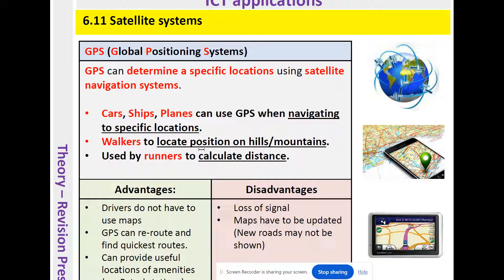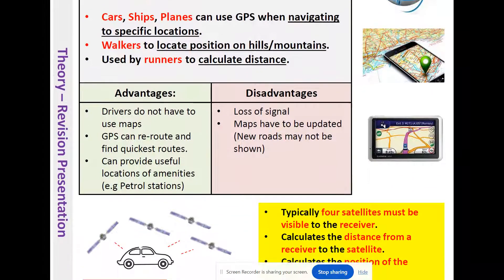A great thing about GPS in the car, for example, is you can work out the time it may take to get to a particular location, as well as the distance. As you get closer, the time is reduced. Sometimes when there's traffic, applications can suggest alternative routes which may be quicker. Let me come back to the advantages and disadvantages.